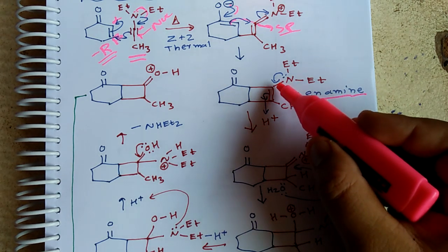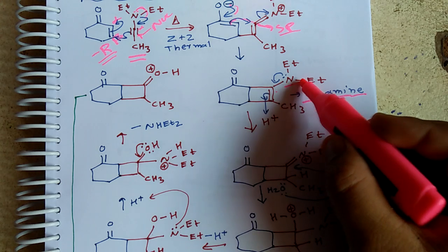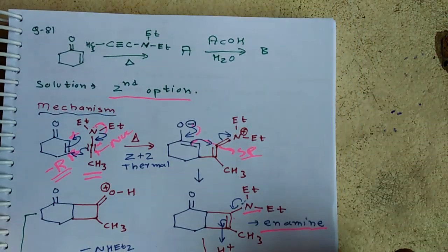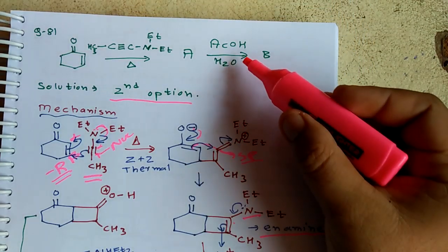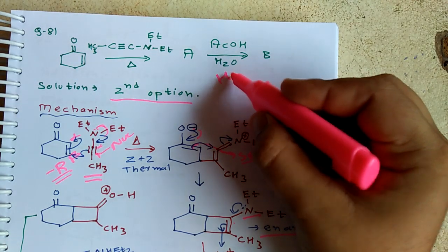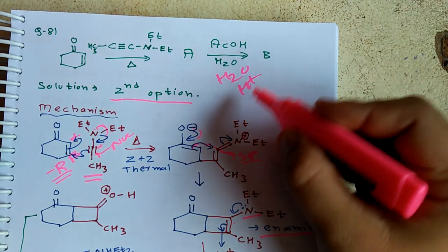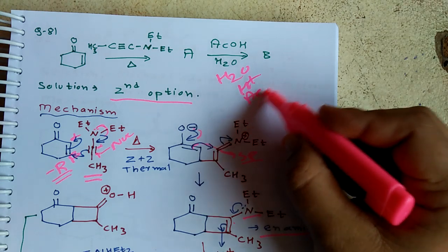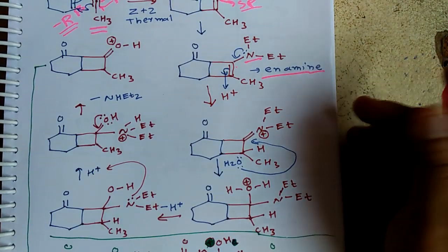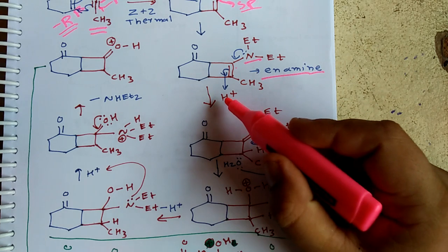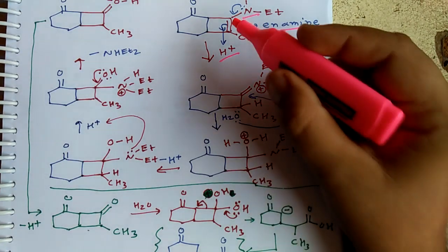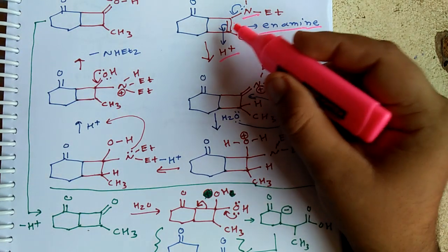What is an enamine? An enamine is an alpha-beta unsaturated amine. Now, what they have given in the question is acetic acid. Acetic acid means we also have water, H+ acid, and acetate ion.